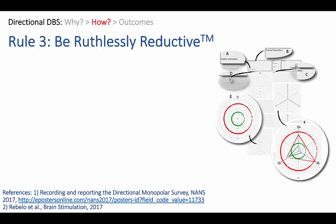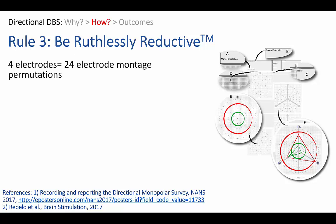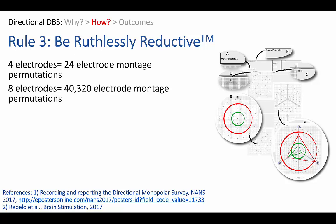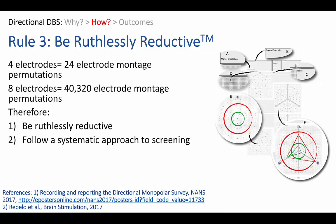Rule three is to be ruthlessly reductive. When you have four electrodes, you have 24 possible electrode montage permutations. When you have eight electrodes, you have 8 factorial — 40,320 — electrode montage permutations. So to get through the workload, you need to be ruthlessly reductive, meaning that once you find a few contacts with a good therapeutic window, if a third contact alone does not produce anywhere near that level of benefit, you can abandon testing that contact and move on. You have to follow a systematic approach to screening — it doesn't matter what the system is, as long as you follow a system. The figure on the right shows the graphical documentation scheme that we've used and published both in our paper and in a poster.